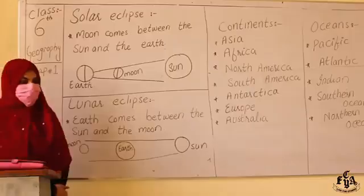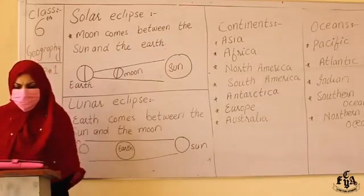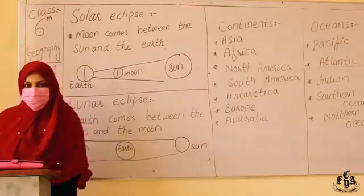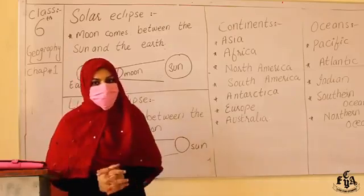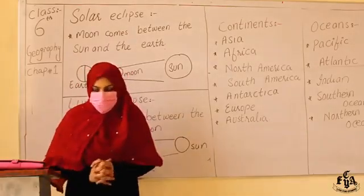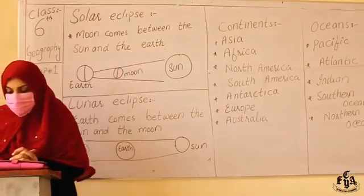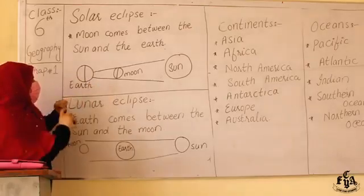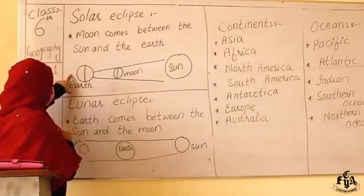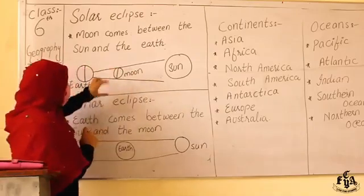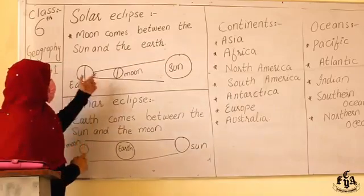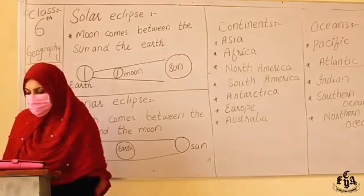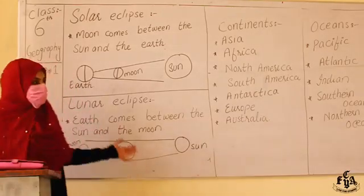The next topic is solar and lunar eclipses. The Earth revolves around the Sun and the Moon revolves around the Earth. A solar eclipse occurs when the Moon comes between the Sun and the Earth, casting its shadow on the Earth, due to which the Sun is not seen completely or partially from the Earth.